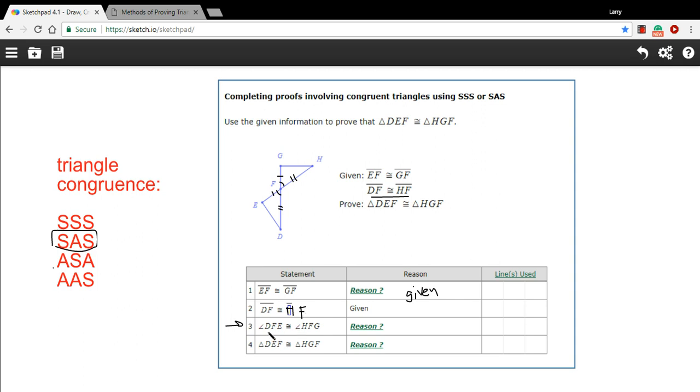Then it says angle DFE is congruent to angle HFG. So DFE, that's this angle right here. And HFG, that's this angle right here. So that's referring to this pair of vertical angles. So the reason they're congruent is because they are vertical angles. So I'll just write a shorthand here for vertical angles.